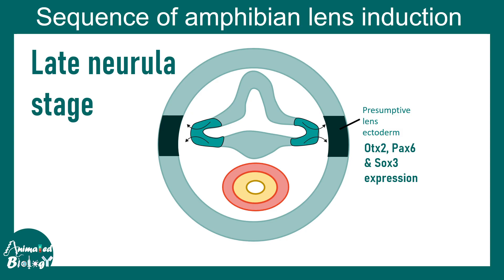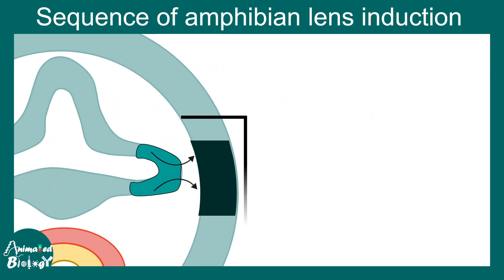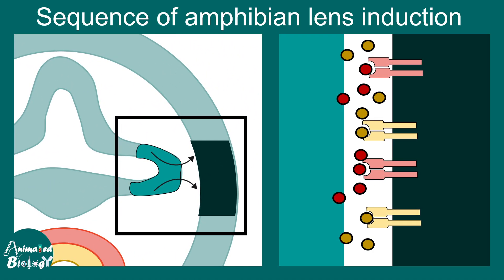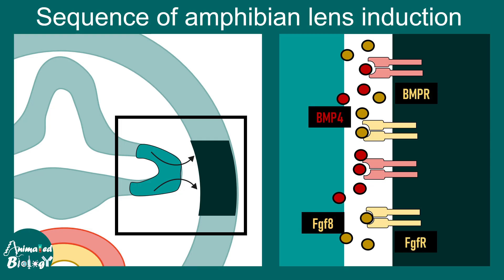What are the inductive cues — the messages that the optic vesicle provides to the ectoderm so it can become the future lens? Experimentation has found that these molecules are BMP4 and fibroblast growth factor 8 (FGF8). They bind to BMP receptors and FGF receptors in the presumptive lens ectoderm, initiating a signaling cascade that leads to production of transcription factors of the SOX family and LMAF family.